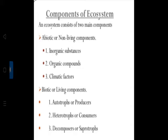Ecosystem is a community of organisms interacting with each other and with the environment such that energy is exchanged and system-level processes emerge. According to FR Fossberg, ecosystem is a functioning, interacting system composed of one or more living organisms and their effective environment. The components of ecosystem consist of abiotic or non-living components — that is inorganic substances, organic compounds, and climate factors.